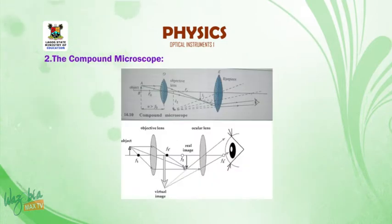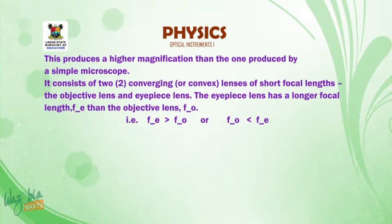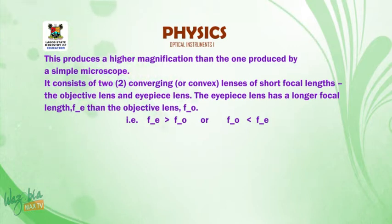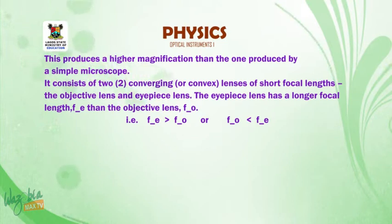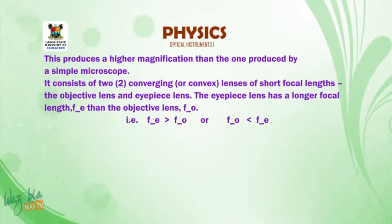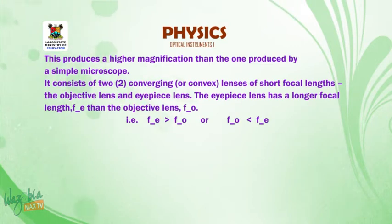The compound microscope produces a higher magnification than the one produced by a simple microscope. It consists of two converging lenses of short focal length: the objective lens and the eyepiece lens. The eyepiece lens has a longer focal length, FE, than the objective lens, F0. That is, FE is greater than F0, or F0 is less than FE.